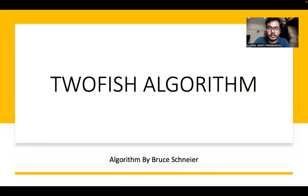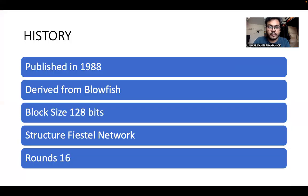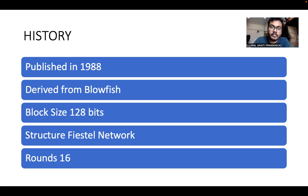This algorithm is proposed by Bruce Schneier. It was published in 1988 and is derived from another algorithm called Blowfish. For this algorithm, the block size is 128 bits and the structure uses a Feistel network. A total of 16 rounds are performed. An interesting fact is that when it was proposed, it became a finalist in a competition, ultimately ranking second.